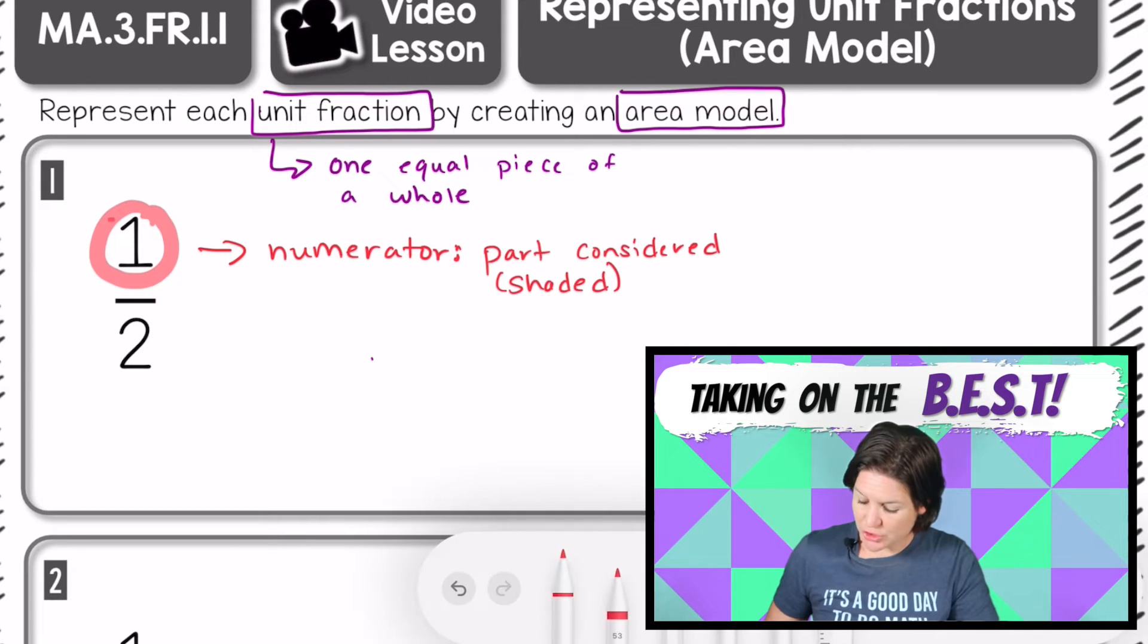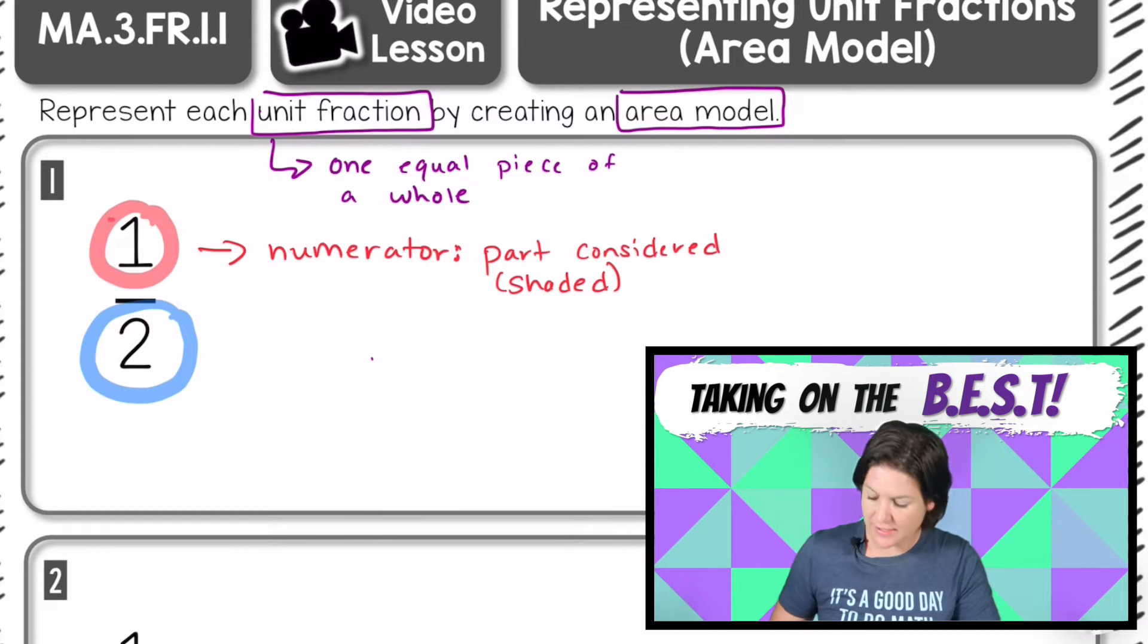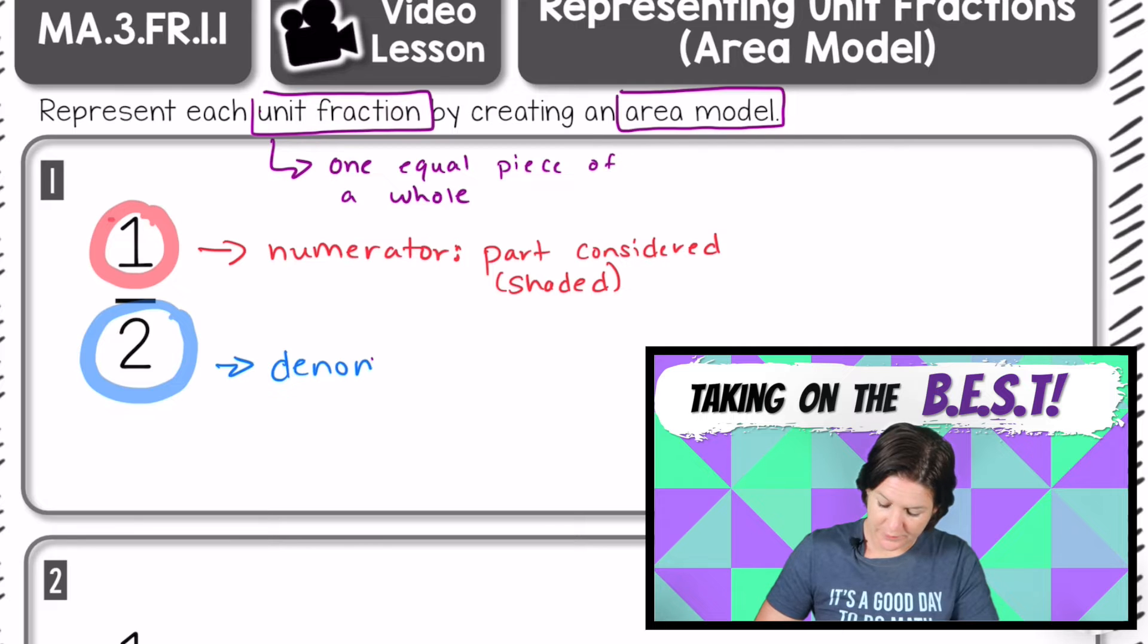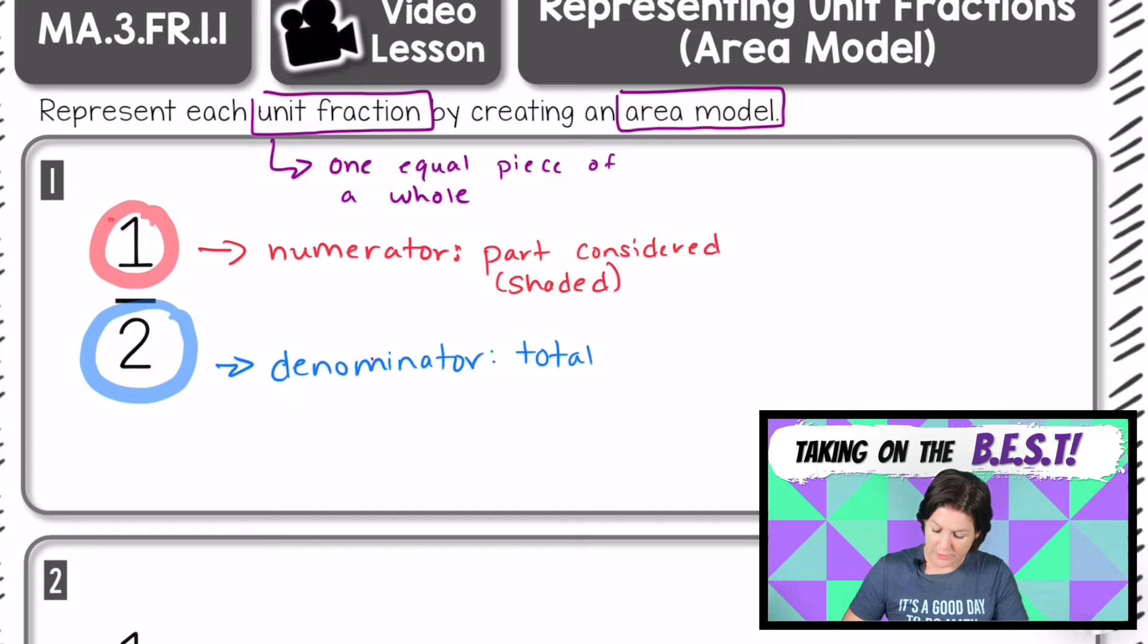So we're going to consider one part, which is usually represented by shading. And when we jump down from the fraction bar, this is the denominator. The denominator is the total number of equal parts.